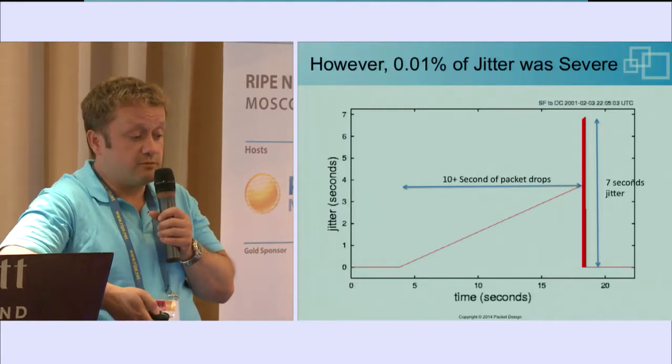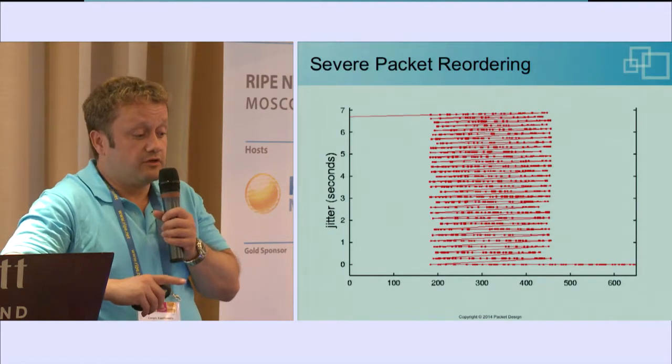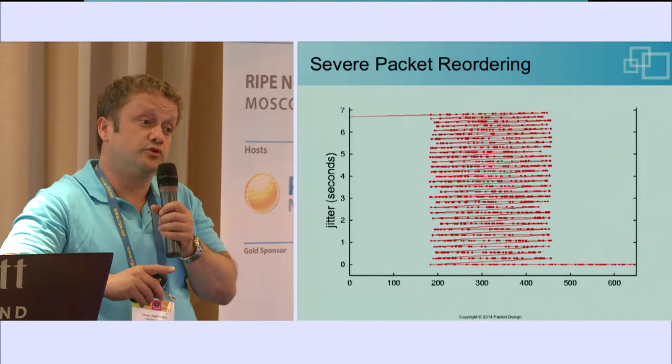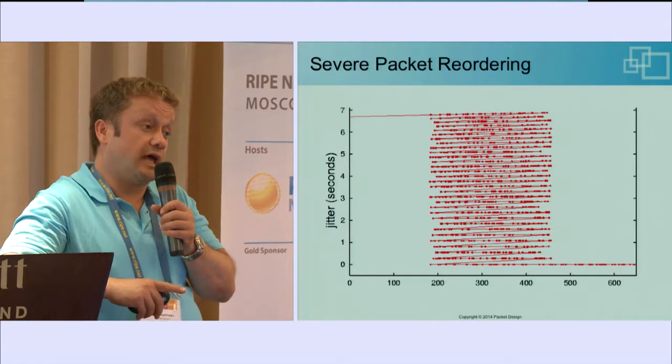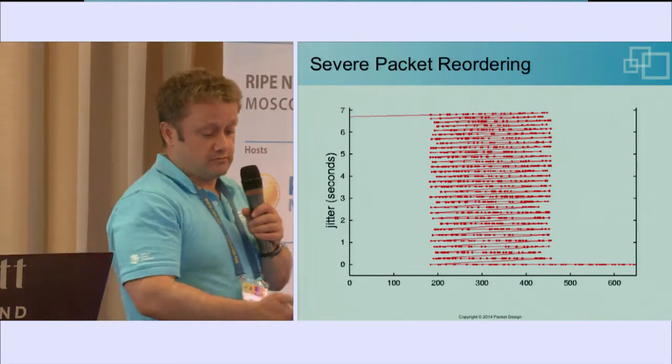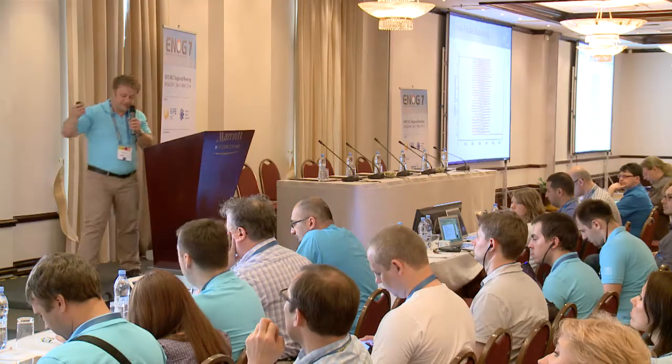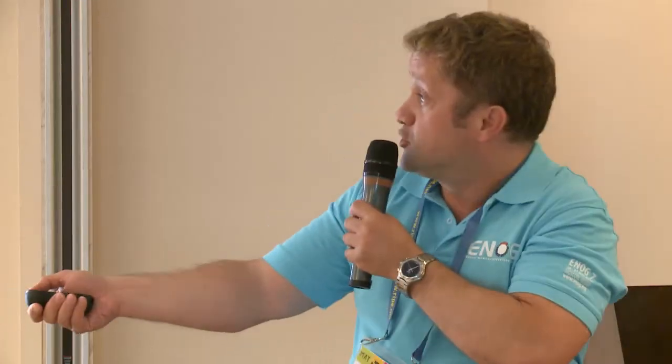In this graph, the time axis on the x-axis is basically the transmission time of our measurement packets. But we looked at the same graph with the reception time of the packets on the x-axis instead. Basically, packets come in, and we can see major reordering is happening.